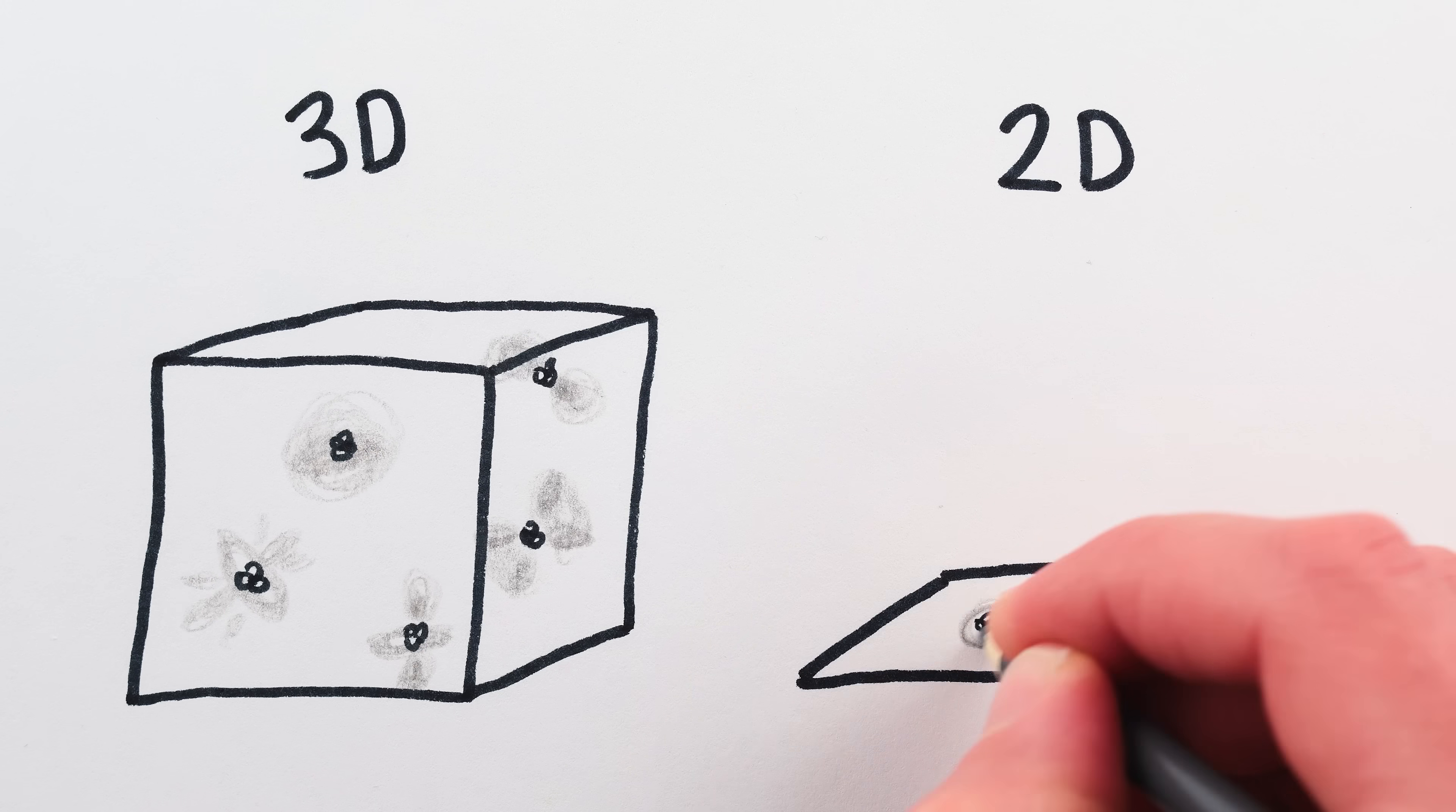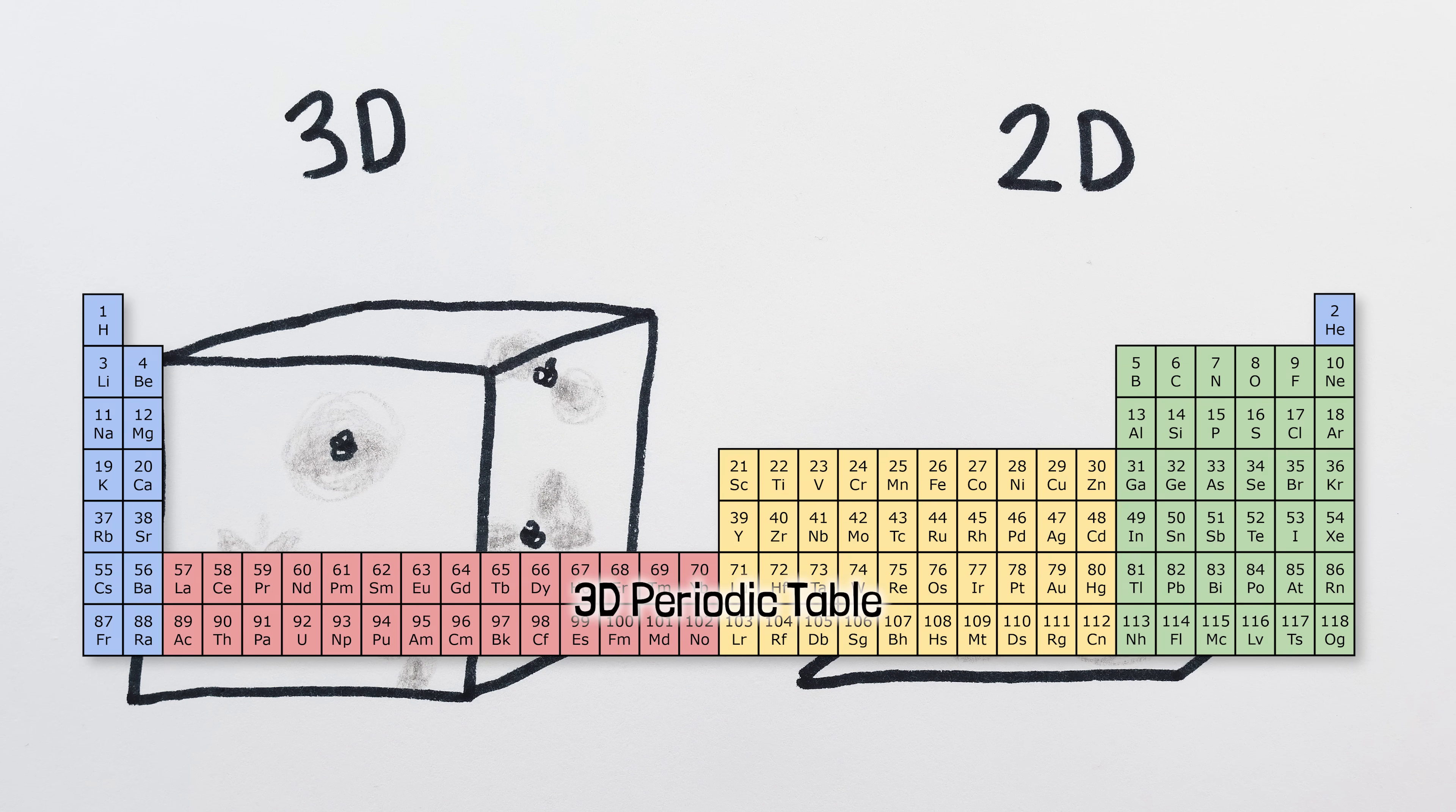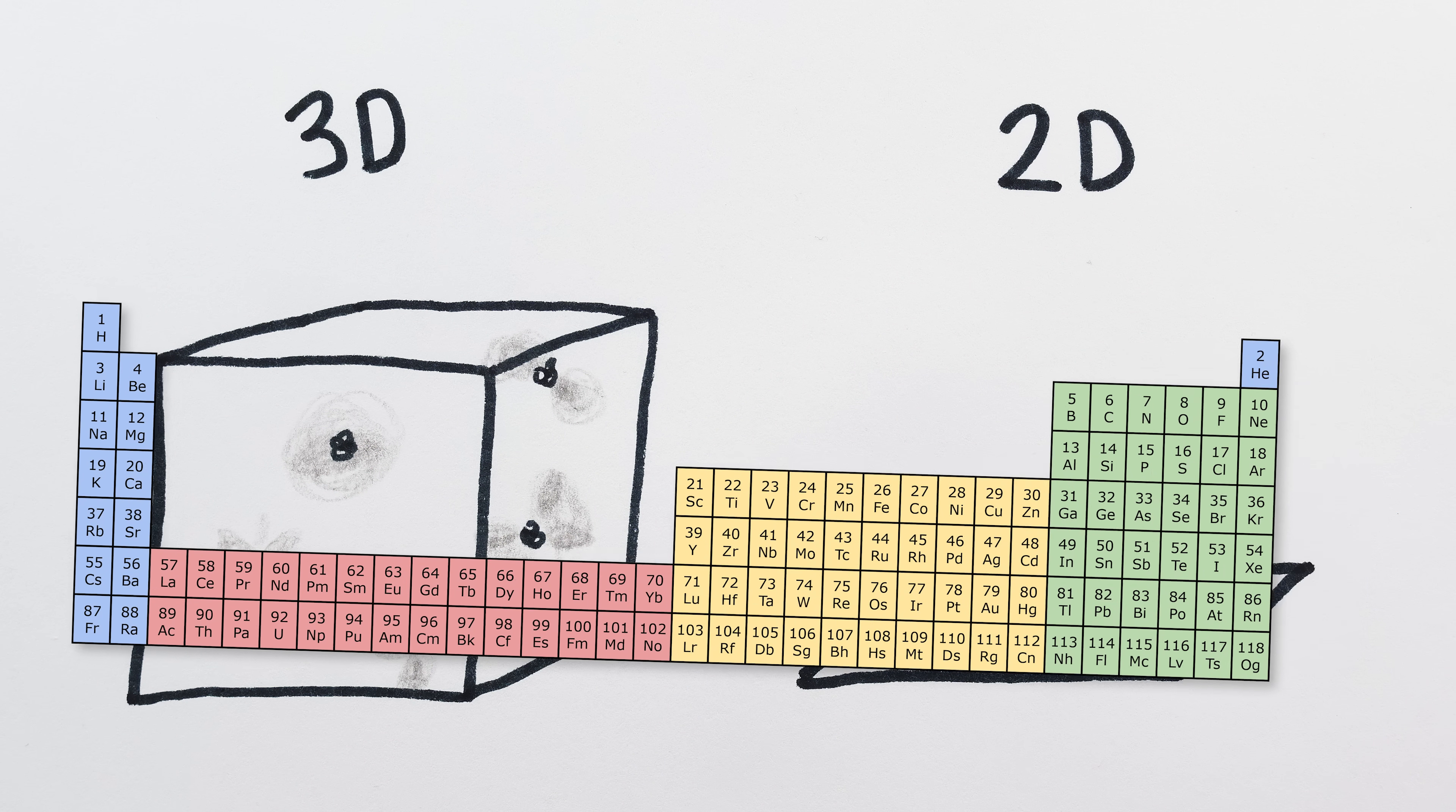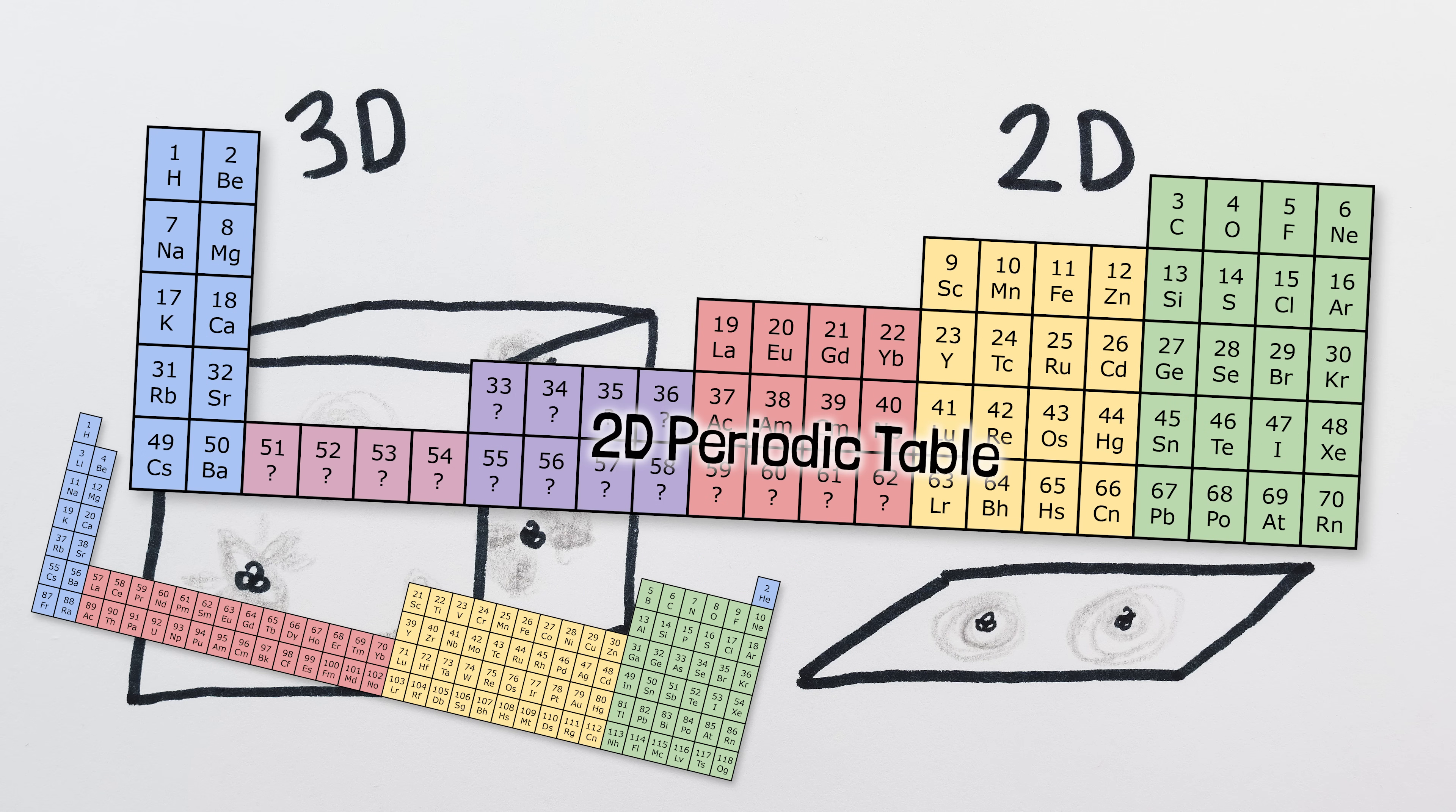In a two-dimensional version of our universe, electrons would still orbit atoms and there would still be a periodic table for the elements, but it would be different from our table and would look like this. Here is why.